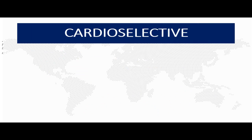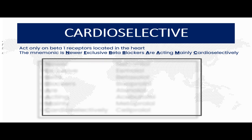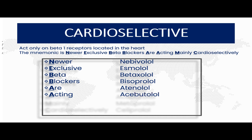Cardioselective beta blockers only work on beta-1 receptors located in the heart. The mnemonic to help you remember these is: 'Niva exclusive beta blockers are acting mainly cardioselectively.' N stands for Nebivolol, E for Esmolol, B for Betaxolol, again B for Bisoprolol, A for Atenolol, the second A for Acebutolol, M for Metoprolol, and C for Celiprolol.